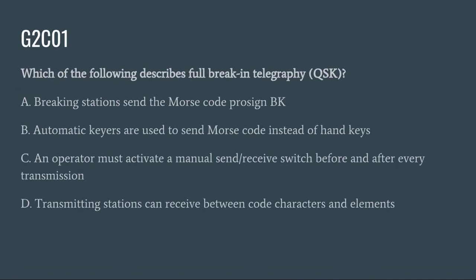G2C01: Which of the following describes full break-in telegraphy (QSK)? A. Breaking stations send the Morse code prosign BK. B. Automatic keyers are used to send Morse code instead of hand keys. C. An operator must activate a manual send-receive switch before and after every transmission. Or D. Transmitting stations can receive between code characters and elements. The correct answer is D: transmitting stations can receive between code characters and elements.